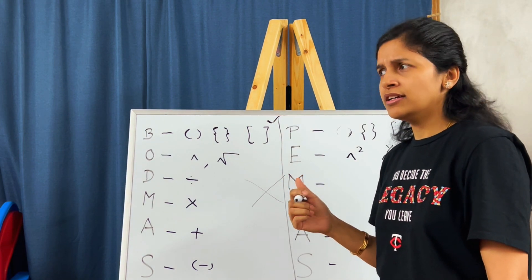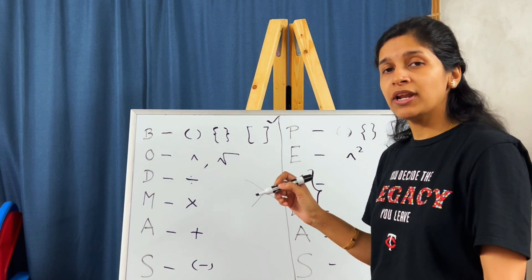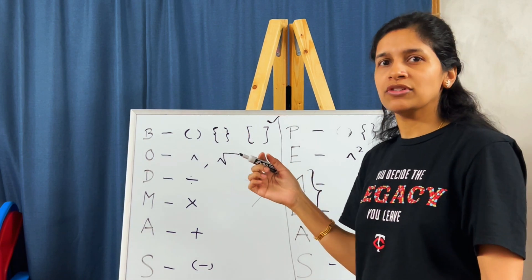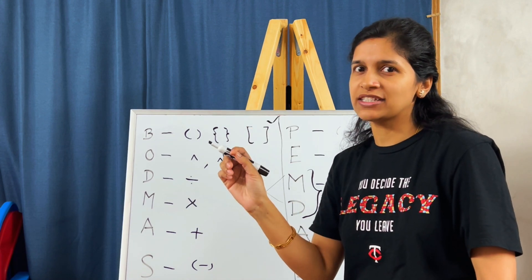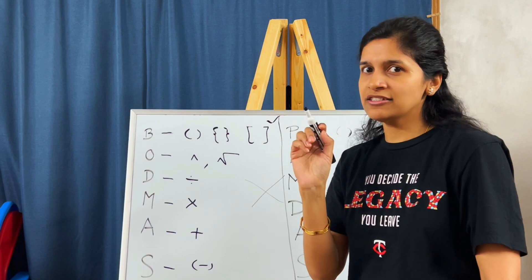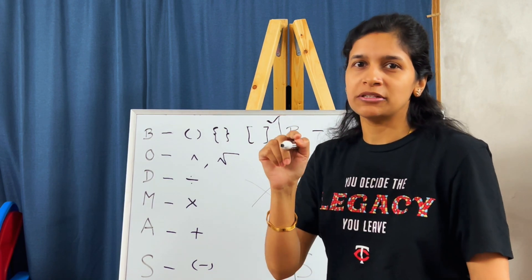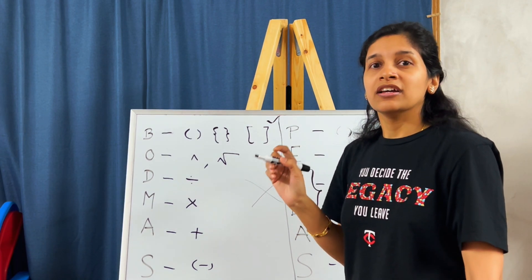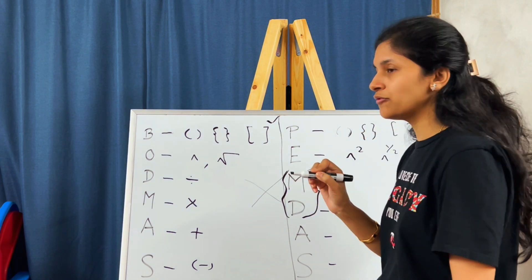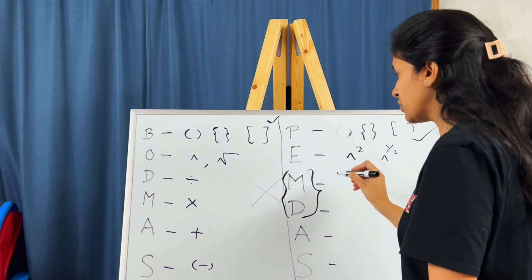Does that mean multiplication should come first in PEMDAS? No. PEMDAS says Multiplication or Division — either can be solved first, going from left to right. So whatever comes first from the left side, you solve that first. If division comes first, solve division first; if multiplication comes first, solve that first. Just because M comes before D in PEMDAS doesn't mean you multiply first. That is the source of confusion, and because of this misunderstanding many people get wrong results.